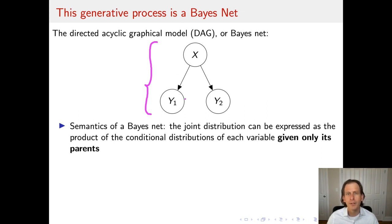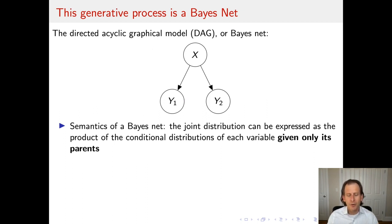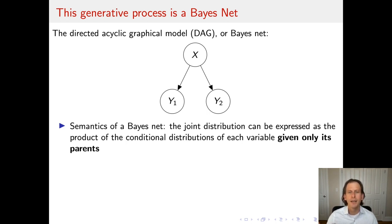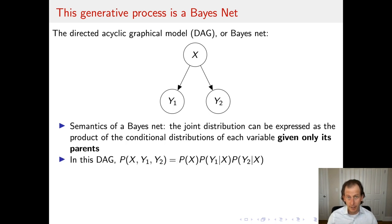The outcome of Y1, for example, the first coin flip, will have a different distribution depending on what type of coin you're flipping. That intuitive interpretation also has a formal semantics associated with it, which is the mathematical interpretation of a Bayes net. That semantics is as follows: the joint distribution on all the random variables in the network can be expressed as the product of the conditional distributions of each variable given only its parents, where parents are the set of nodes that have edges pointing to the node in question. So the joint on X, Y1, and Y2 can be re-expressed as the probability of X times the conditional of Y1 given X times the conditional of Y2 given X.